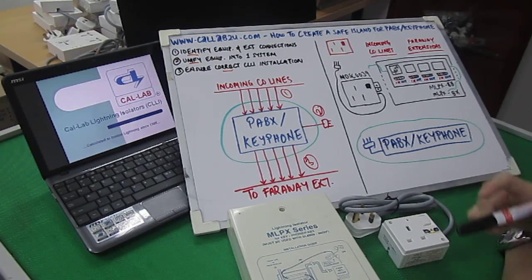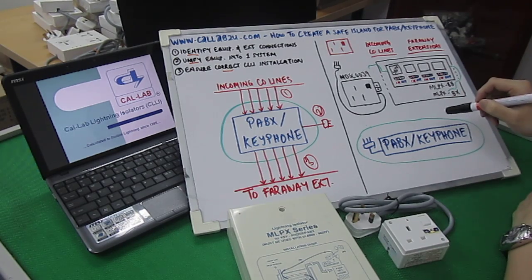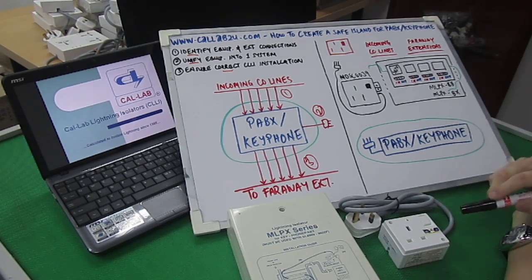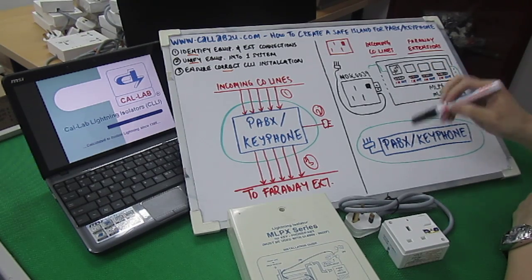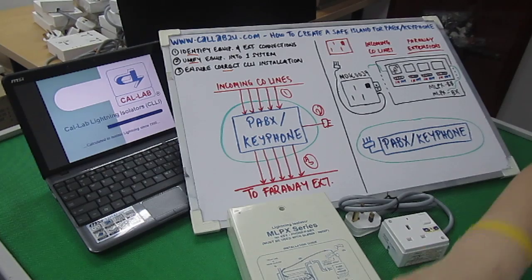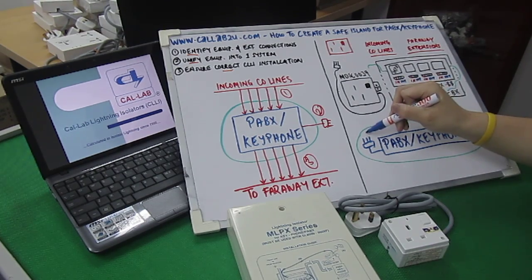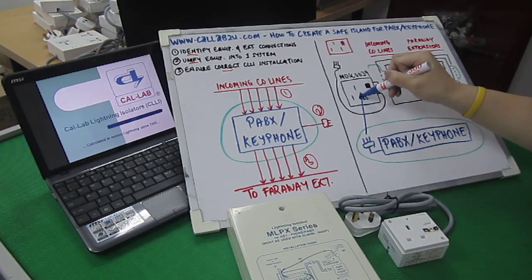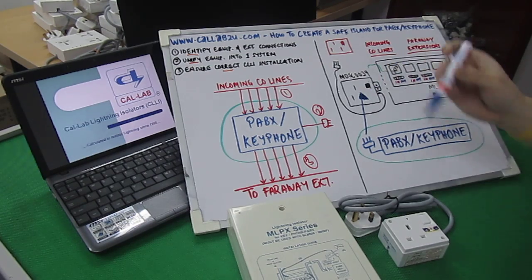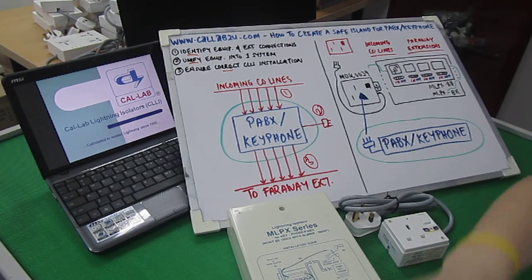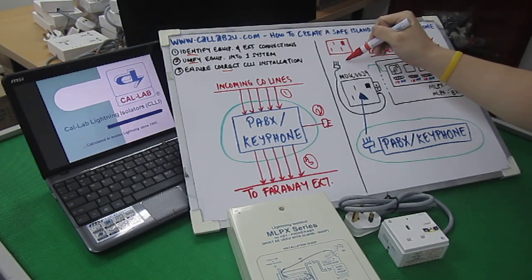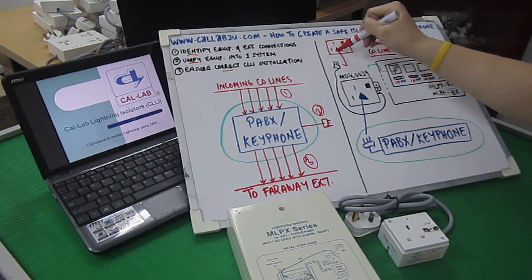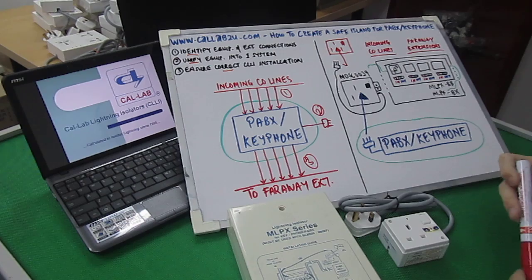The second thing to note is that all the equipment you want to protect has to draw power supply from one power isolator. In this particular case, you only have a PABX or key phone system. So this three-pin plug here would draw power supply from the MDSC0039. And then, of course, the MDSC0039 three-pin plug will be the first point of contact to the wall.